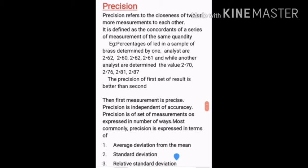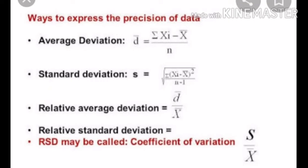Precision is independent of accuracy. Ways to express precision include: average deviation (d-bar), standard deviation, and relative standard deviation. Average deviation d-bar = Σ|xi − x̄| / n. Standard deviation = √[Σ(xi − x̄)² / (n−1)]. Relative average deviation = d-bar / x̄. Relative standard deviation (coefficient of variation) = s / x̄.